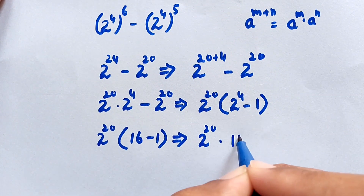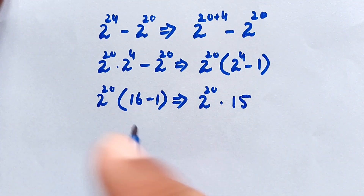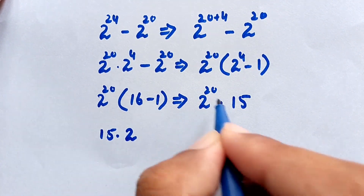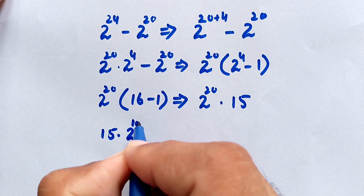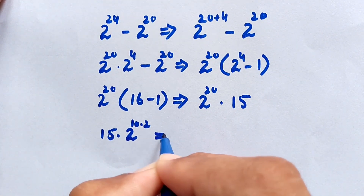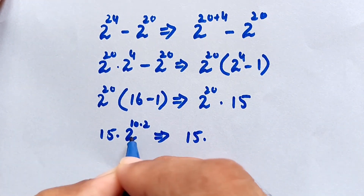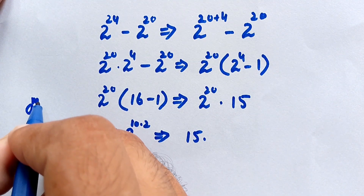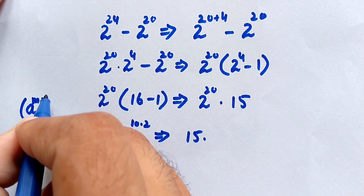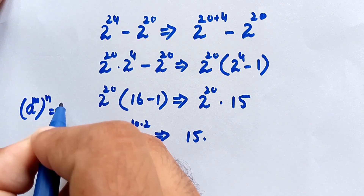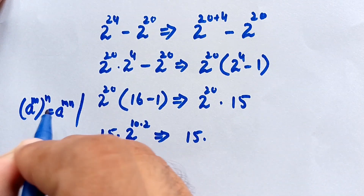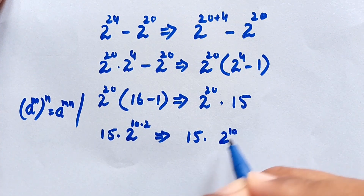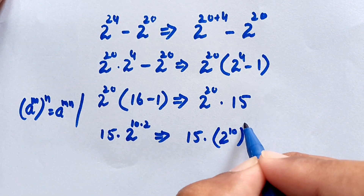This gives us 15 times 2 to the power of 20. Now 2 to the power of 20 is also equal to 2 to the power of 10, to the whole power of 2. This is in the form of a to the power of m, to the whole power of n, which equals a to the power of mn. Applying this, we get 15 times 2 to the power of 10, squared.